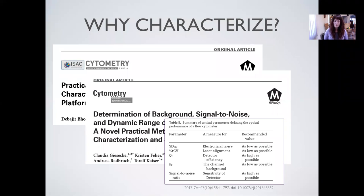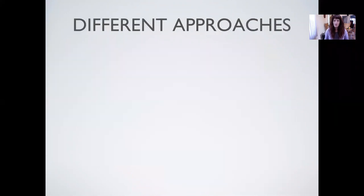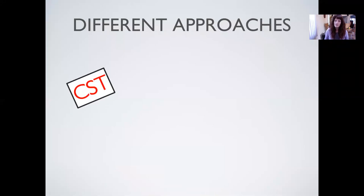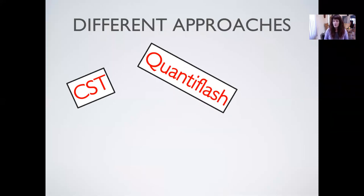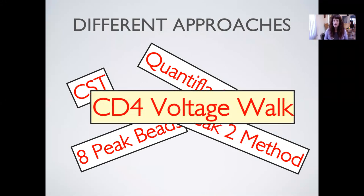Most people might use CST, and we'll dive into why that might not be the best approach for setting voltages. There are different approaches: CST (cytometer setup and tracking) beads specific to Diva, QuantiFlash to measure Q and B, eight-peak beads, the peak two method, and others. But the CD4 voltage walkup is the one we're going to be talking about today. The CD4 voltage walkup is very nicely summarized in the Immunophenotyping Methods and Protocols by Springer, specifically in chapter one by Florian Marr and Aaron Tisnick.